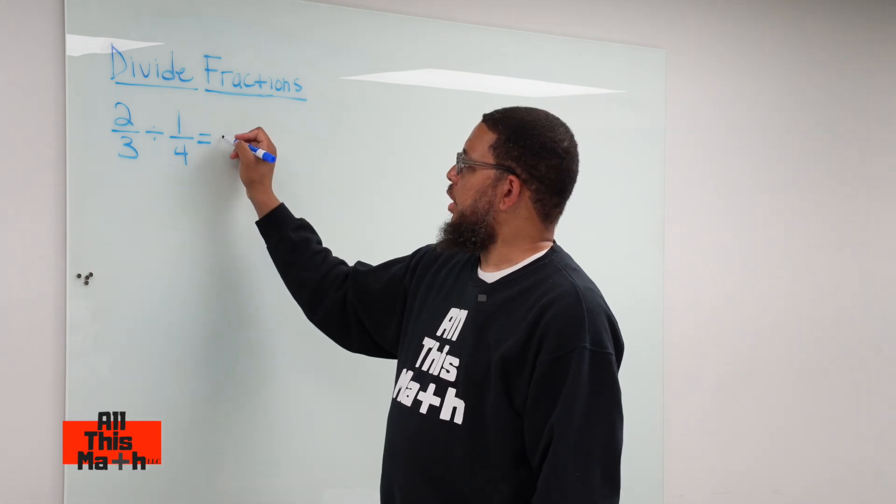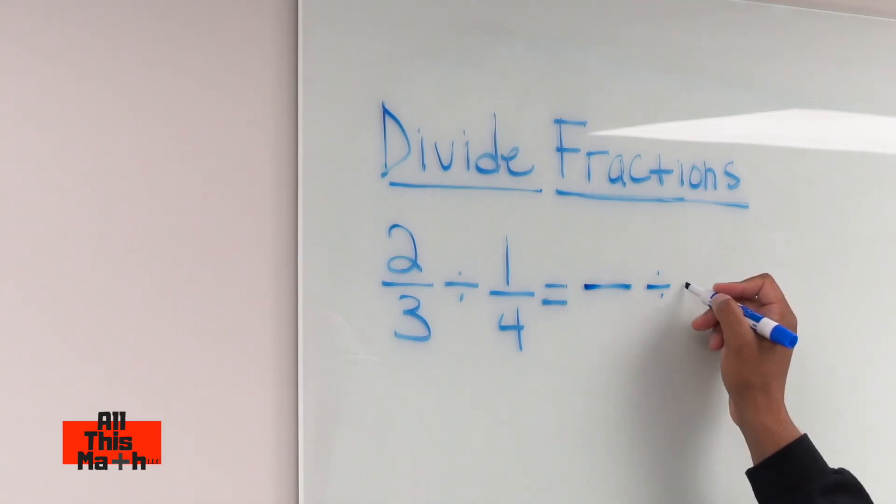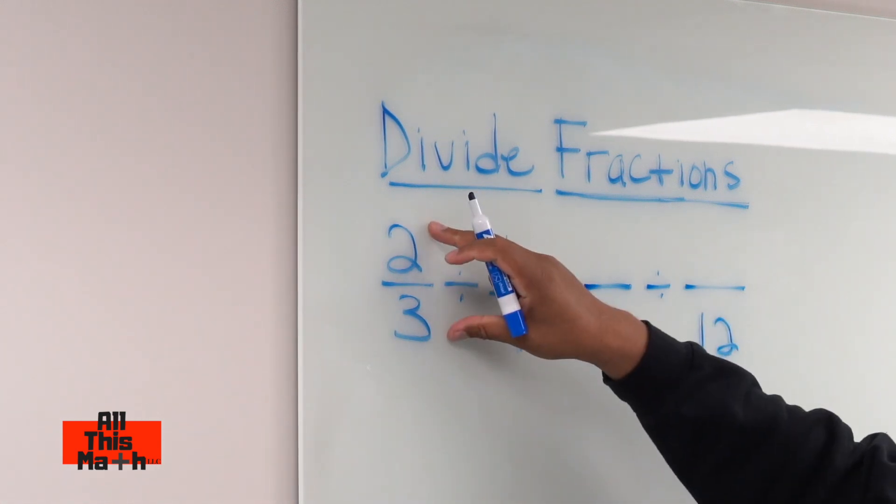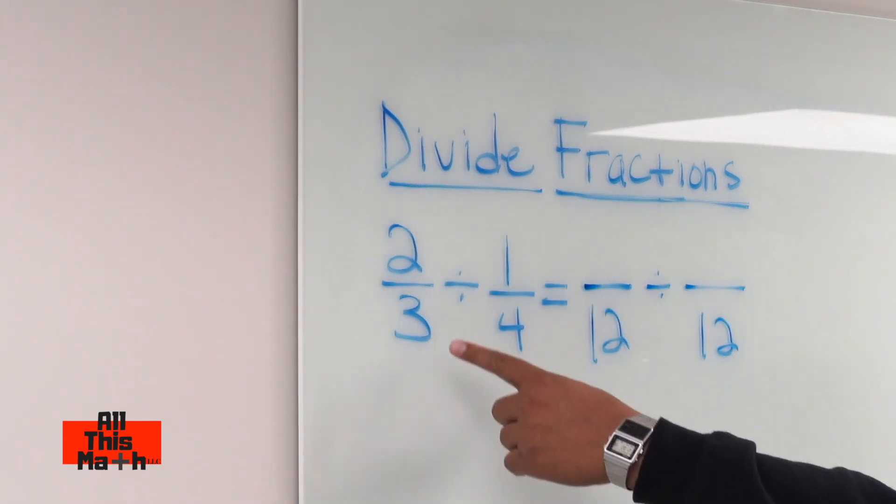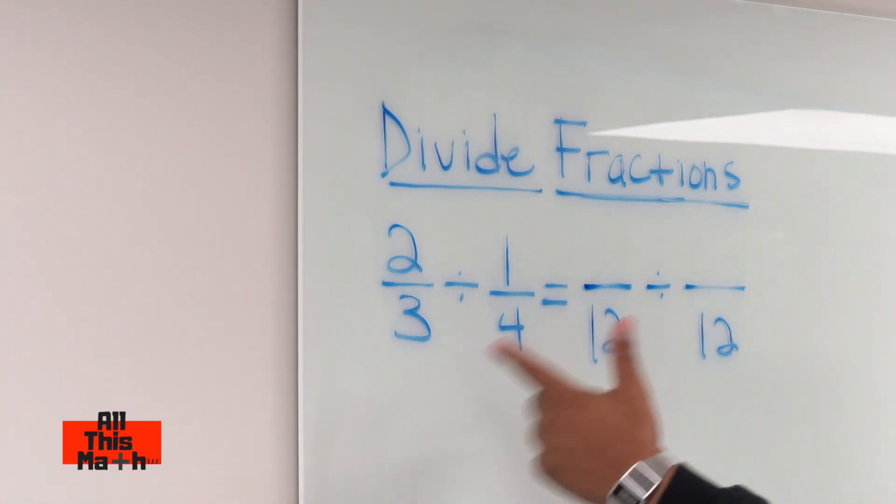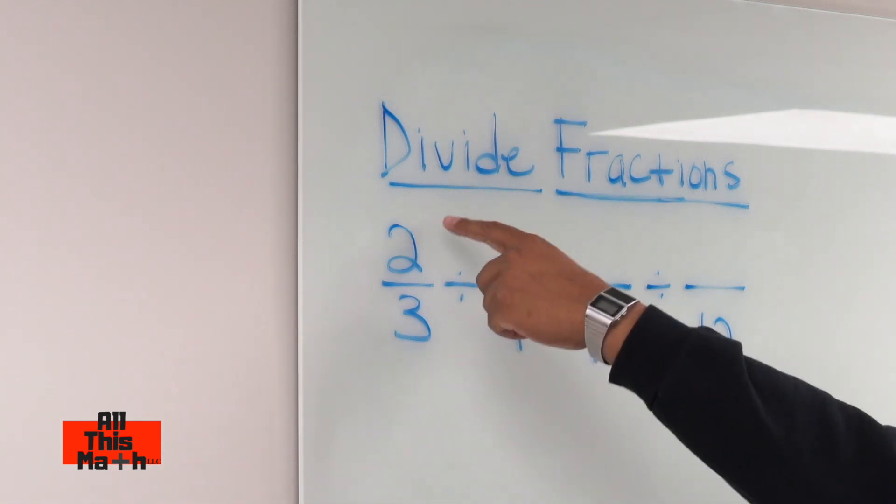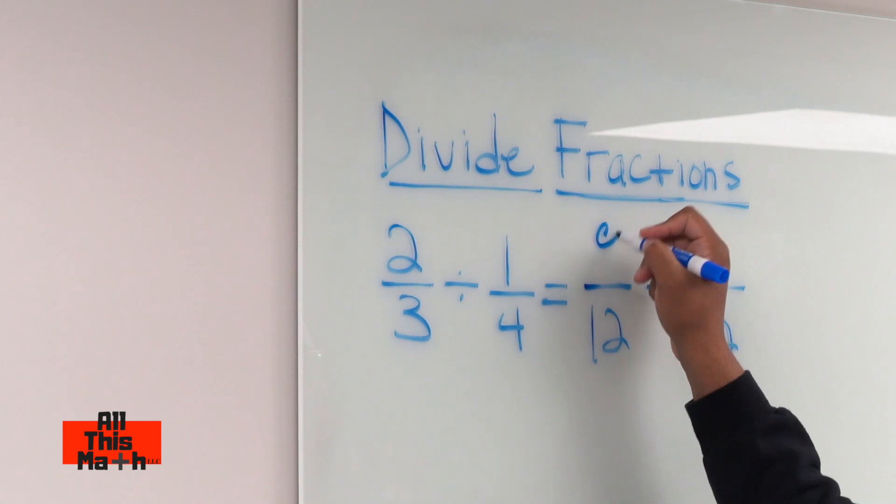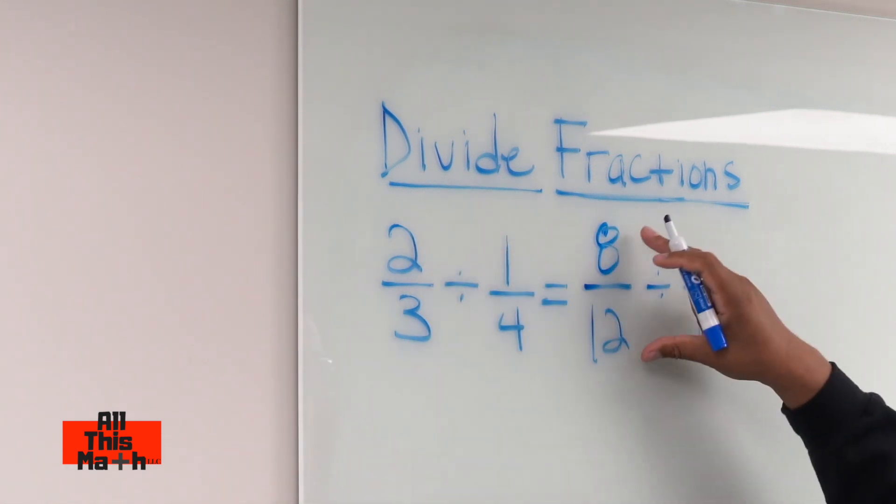We're creating equivalent fractions that have a denominator of 12. I have 2/3 right here. What fraction is equivalent to 2/3 that has a denominator of 12? If I did 3 times 4 to get 12 on the bottom, I do 2 times 4 to get 8 on top. So 2/3 is equivalent to 8/12.